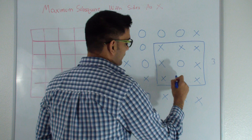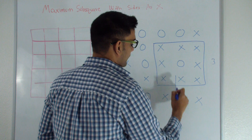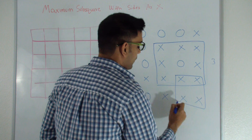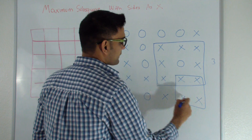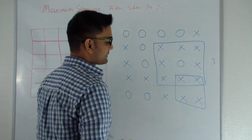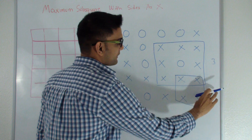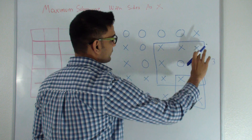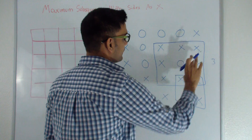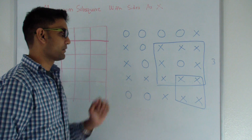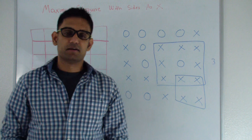Here's another example. All the sides are made up of X's, but the length of the side here is 2 and the length for this one is 3. So this particular example should return 3.